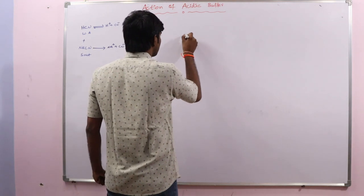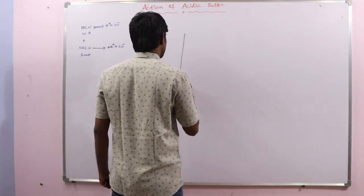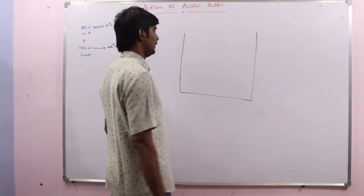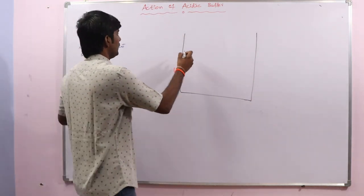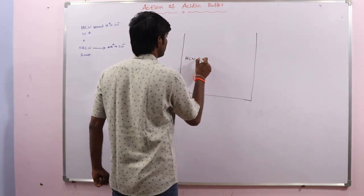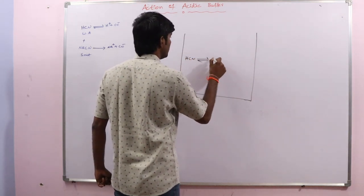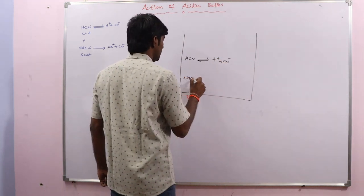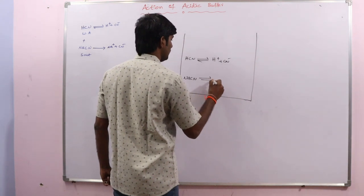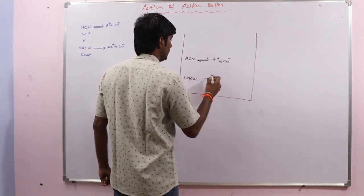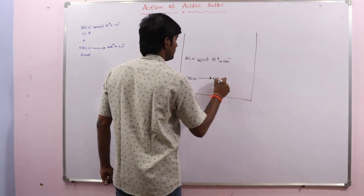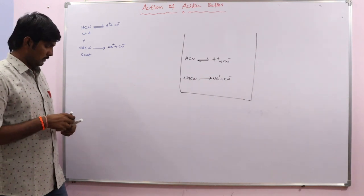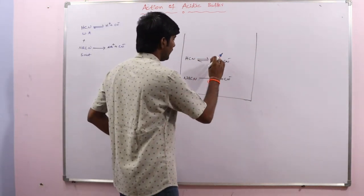Let us take this buffer solution in a container. In this container we have HCN which dissociates into H⁺ and CN⁻, and NaCN which, being a strong electrolyte, dissociates into Na⁺ and CN⁻. This is our buffer solution.